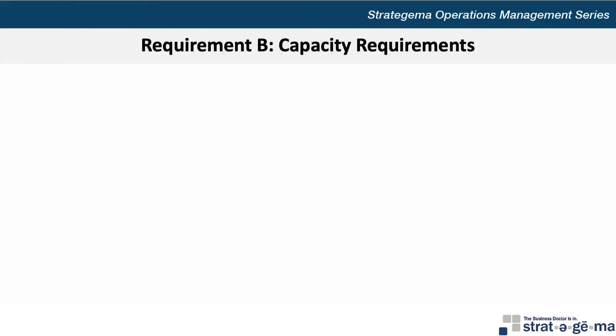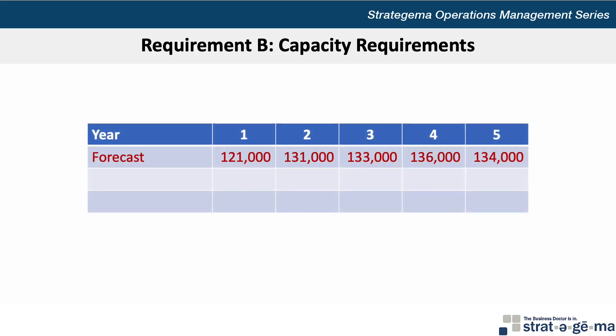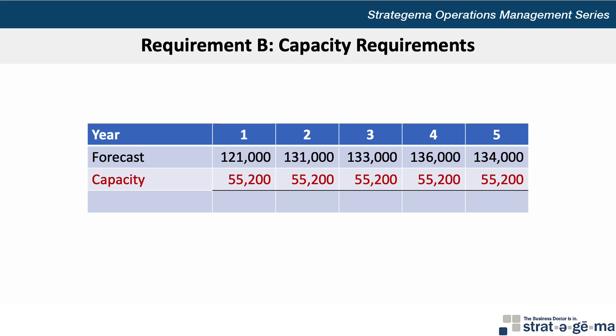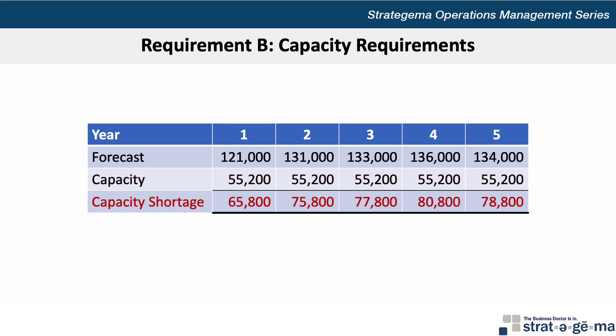For requirement B, we can construct a quick table with a column for each year, and in the first row enter the forecast numbers provided in the data: 121,000 units forecasted for year 1, 131,000 units for year 2, and so on, all the way to 134,000 units for year 5. Next, we can enter the capacity of 55,200 units per year, which we just calculated in requirement A. The difference between the forecast and the available capacity is any excess capacity or shortage. In this case, we will have a capacity shortage for all years.